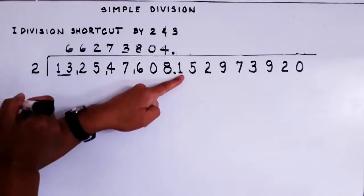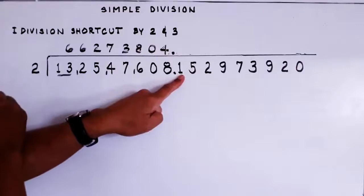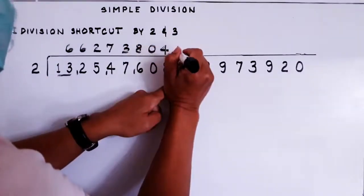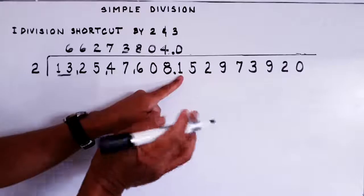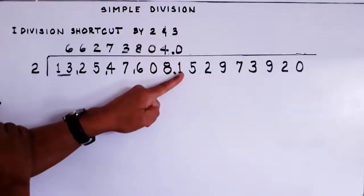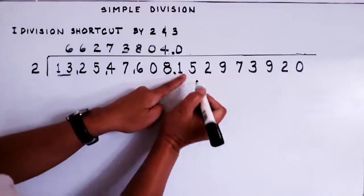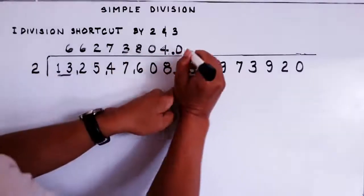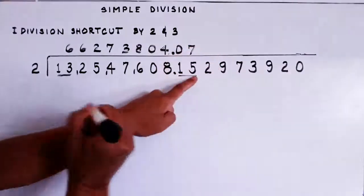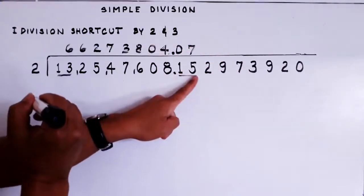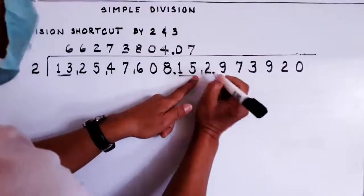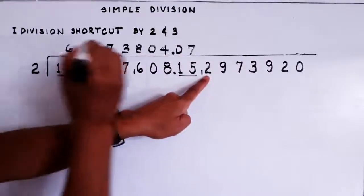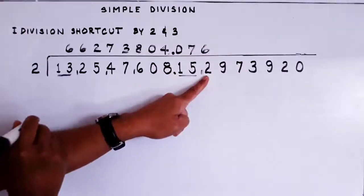Now the decimal point — leave it. Then 1 divided by 2: we cannot get 2 from 1, so we put zero. It is less than 2. So that 1 carries over — it goes to the next digit, making it 15. We divide 15 by 2 — that gives 7, because 7 times 2 is 14. There is a remainder of 1 from 15. We write that remainder 1 next to the 8, making it 18. Twelve divided by 2 — no, it's 12 now — gives 6.